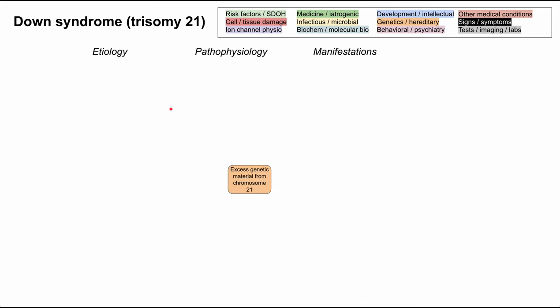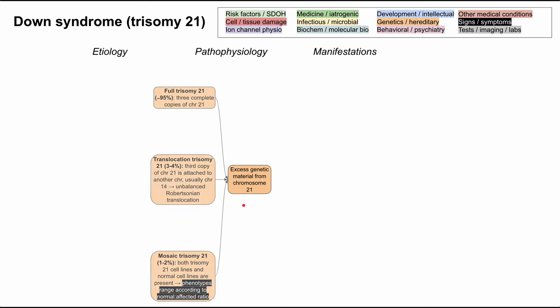At the center of the pathophysiology for Down syndrome is that the patient has excess genetic material from chromosome 21. There are a number of ways this can happen. The most common by far is full trisomy 21, which occurs in about 95% of patients with Down syndrome. In this case, the patient has three complete copies of chromosome 21.